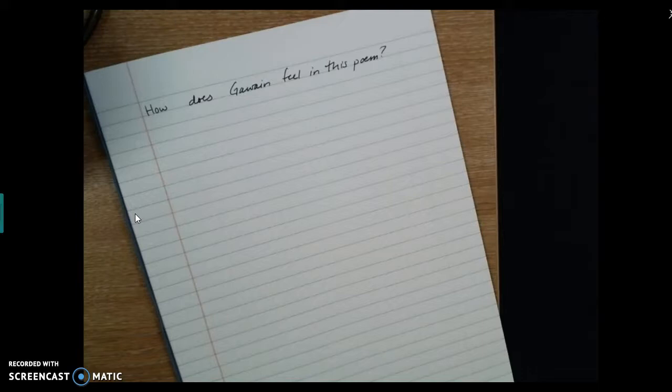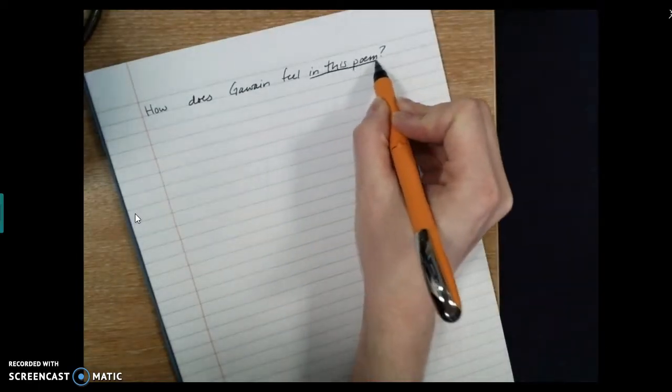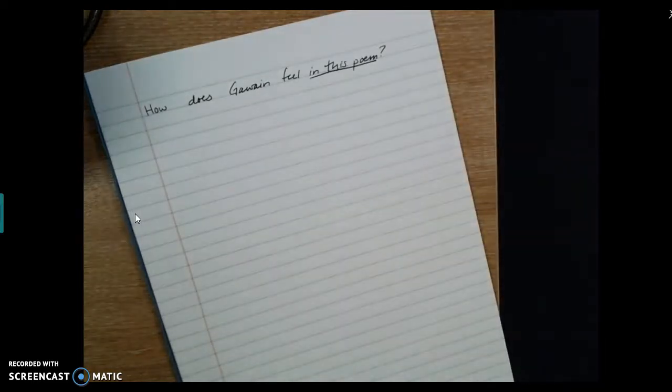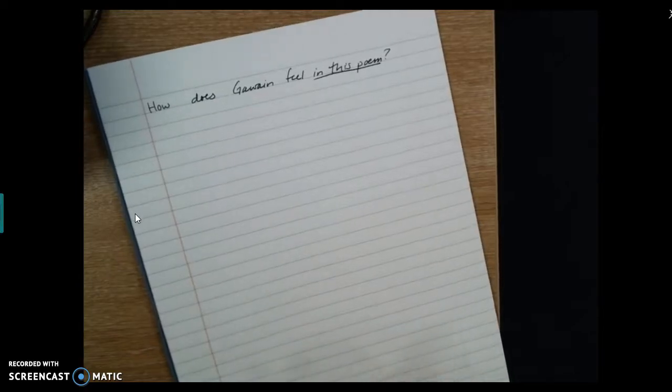Right, not anywhere else. You need to focus just on this poem. I don't want to know how he feels at Camelot when the Green Knight turns up. I don't want to know how he feels at Bertilak's castle. I don't want to know how he feels at the end of the story. I want to know how he feels in this poem, and that's it. Okay, it's a really important thing that a lot of people are getting wrong when it comes to assessments in English right now. Okay, so this is the question.